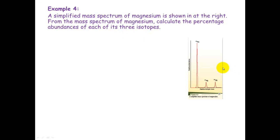Example 4, you will get a picture that looks something like this, and it's going to ask you to calculate the percentage abundances of each of these three isotopes. There is no labeling on the side here. So how do you go about it? You use a good old-fashioned ruler.